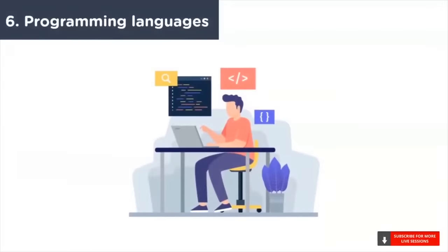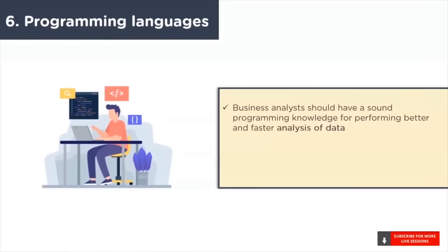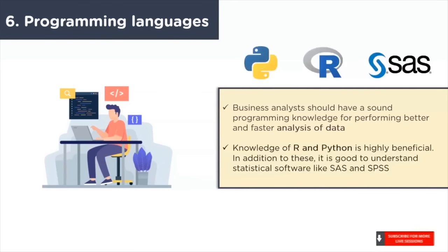The sixth skill is knowledge of programming languages. Business analysts should have good hands-on programming knowledge for performing better and faster analysis of data. Knowledge of R and Python is highly beneficial. Business analysts can help solve complex problems by writing efficient code. Both R and Python have a vast collection of libraries and packages for data manipulation, data wrangling, data visualization, and data analytics — including numpy, pandas, dplyr, tidyr, ggplot, and matplotlib. It is also good to understand statistical software like SAS and SPSS. Using these languages, you can analyze and visualize large datasets and create machine learning models for making future business predictions.